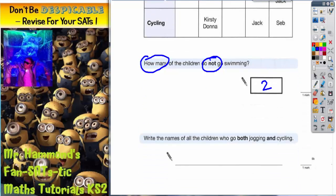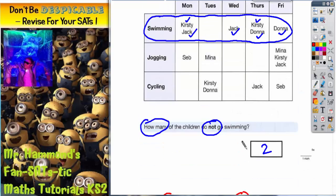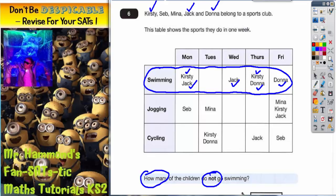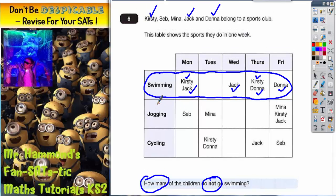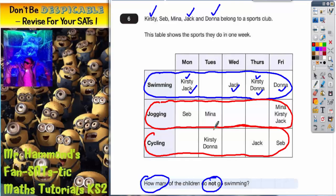Second part of the question, I'm going to use red for. It says write the names of all the children who go both jogging and cycling. So this time we're looking for names and they must do both jogging and cycling. So this time we're going to use red. We're looking for jogging on this row and we are looking for cycling on this row. And I'm going to use the same technique again.